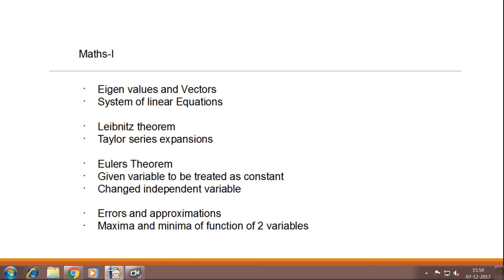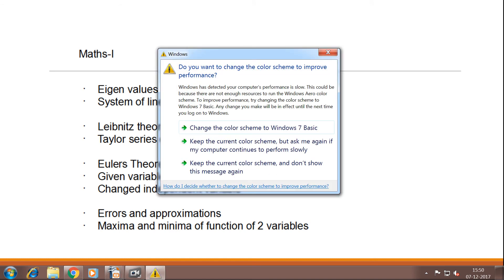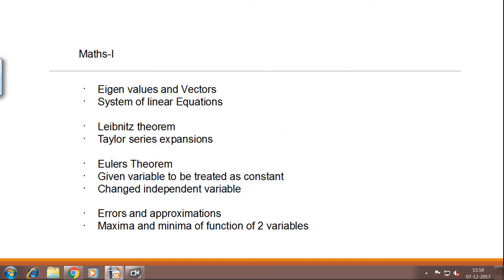So from Eigen values and system of linear equations, by chance if it comes into the same question like question number 1a and 1b, you may get 8 marks or maybe you may get minimum 4 marks here. Same for Leibniz theorem and Taylor series. If it is in the combined question number 3a and 3b, you may get 8 marks here but minimum 4 marks from first two set and 4 marks from second two set. But last three topics that is Euler's theorem and independent variable and given variable to be treated as constant, they are very important for 13 marks. So with these very important topics, you just do a practice from all previous question papers and go for practice of numerical subject.